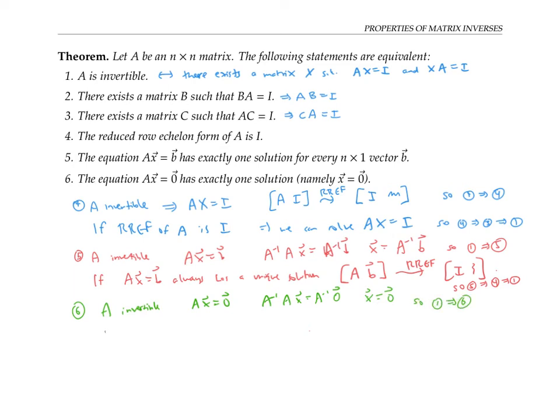And if Ax equals zero has a unique solution, then a similar argument says that A has to be reduced to the form of an identity matrix. And therefore, A is invertible.